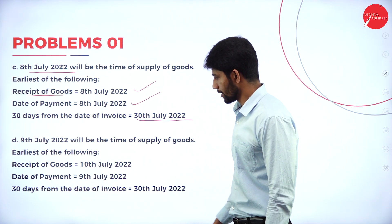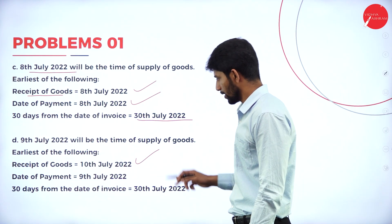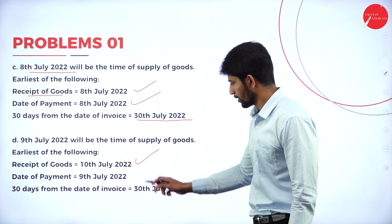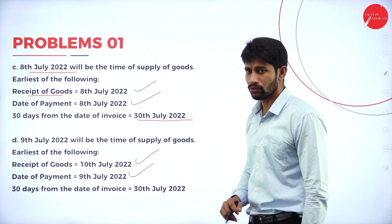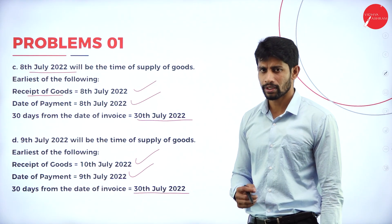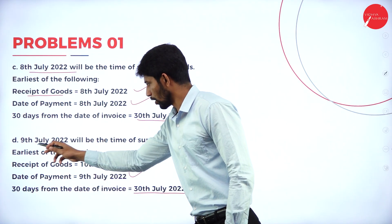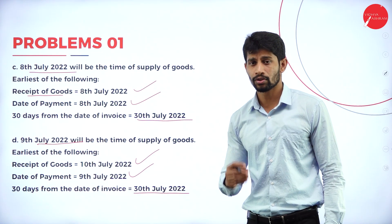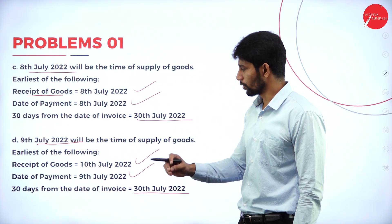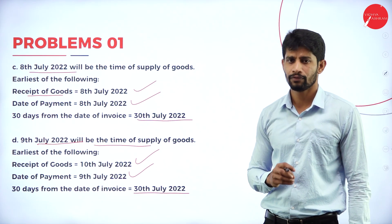Case D: Receipt of goods is 10th July 2022. Date of payment is 9th July 2022. 30 days from the date of invoice is 30th July 2022. In these three dates, which is the earliest? That is 9th July 2022, because that is the earliest date here. So 9th July 2022 will be the time of supply of goods.